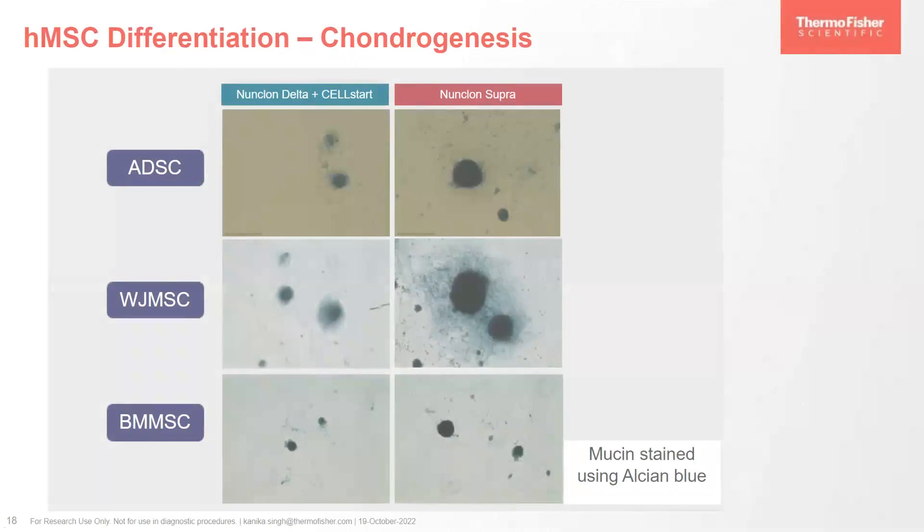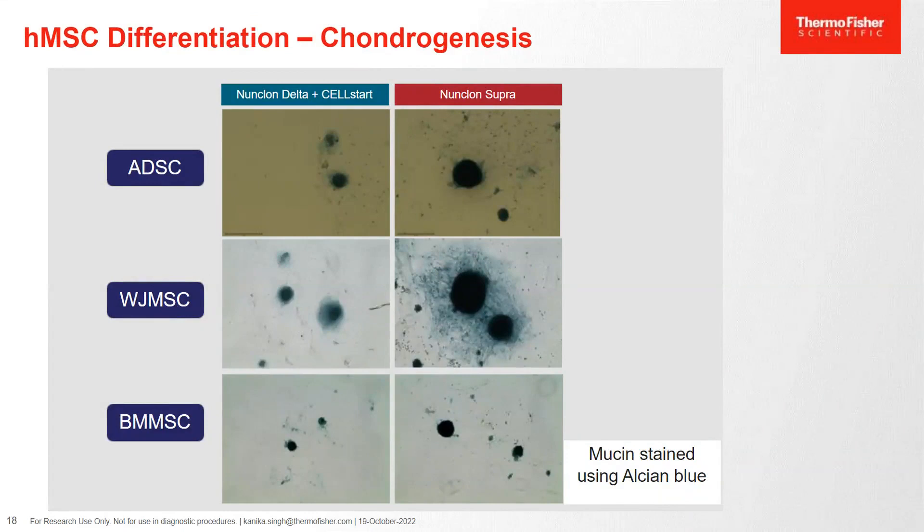And finally, for chondrogenesis, we used Alcian Blue to stain mucin. And as you can see, for ADSCs, WJ MSCs, and BMMSCs, the results are comparable.